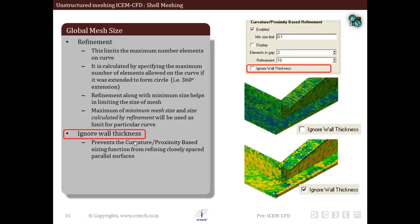The next option within global mesh size is ignore wall thickness. Walls usually have two parallel surfaces in close proximity to each other. Curvature proximity based refinement will produce very fine mesh in this region, which is not necessary in all cases. If this ignore wall thickness option is enabled, it will restrict the refinement of mesh in these areas, thus reducing the mesh count. The figure shows the difference: without this option, a lot of mesh is created in the gap, whereas with ignore wall thickness enabled, the mesh count is reduced.